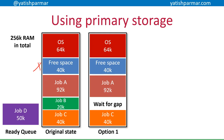The first option is that we wait for a gap. We could wait for job B to finish, but even then we haven't got enough space. We'd then need to wait for either job A or job C to finish before we could fit job D into one of those spaces. The obvious problem is that we're wasting valuable time, even though there is technically enough total space to process job D.